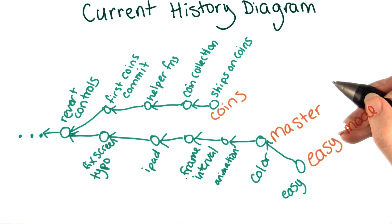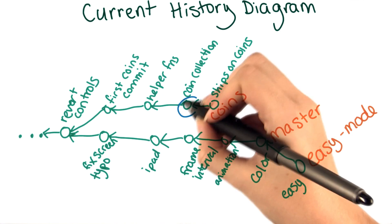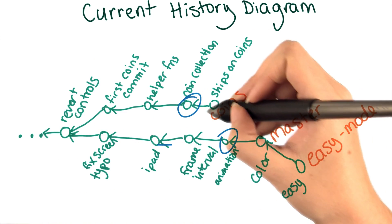This leads us to the concept of reachability. You can see that in our diagram, there are some commits, say this one, that can't be reached by other commits, say this one. There's no way to get from here to here.